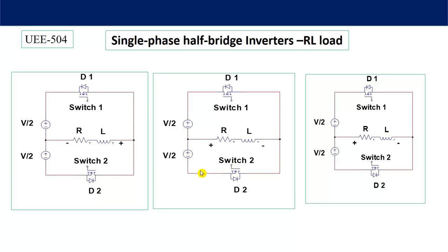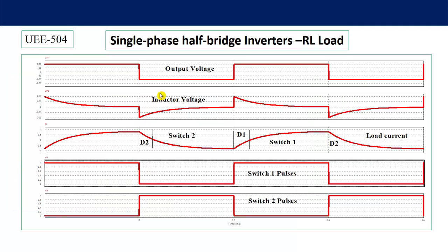During this period when D2 is on, the output voltage is negative. When switch two is on, the output voltage is also negative. So there is no effect on the output voltage — it continues to remain the same because of the diode. During this period D2 conducts, then switch two conducts. At the point when switch one is made on and switch two is made off, let's see what happens to the voltage across the inductor.